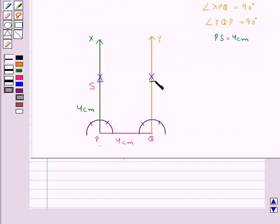We have drawn this arc which intersects YQ at the point R such that we have QR equal to 4 cm.